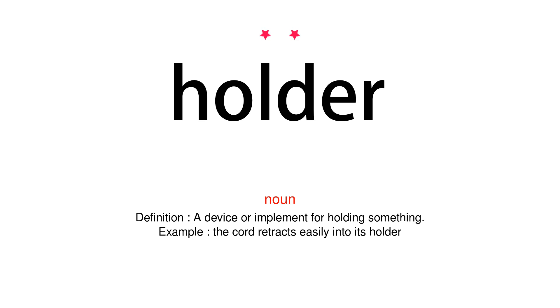Holder. Noun. Definition: A device or implement for holding something. Example: The cord retracts easily into its holder.